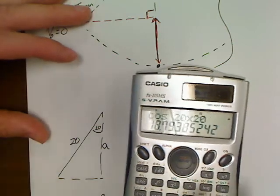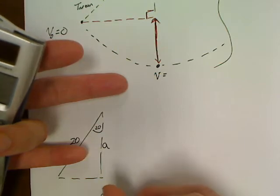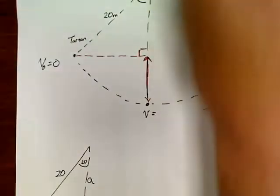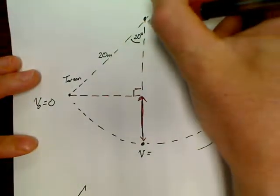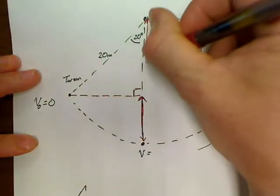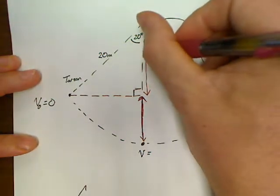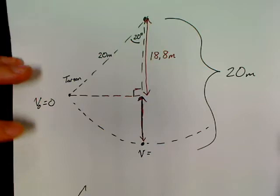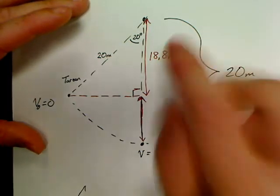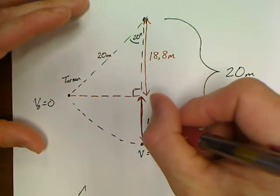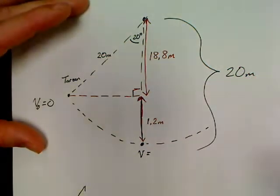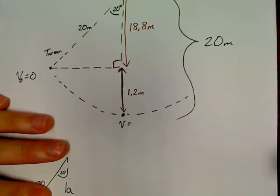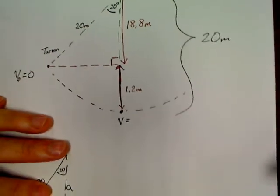So we're basically at 18.8. That means in this problem the distance from here to here is 18.8 meters. It also means my scale is terrible, but what this tells us in this problem is that Tarzan's only falling 1.2 meters. That's it. Now this problem is really easy because here's what's going to happen.